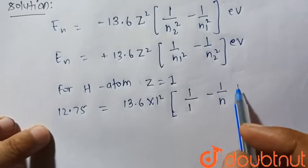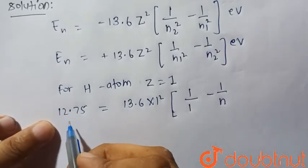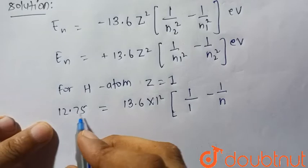In which it will jump after absorbing energy 12.75 electron volt.